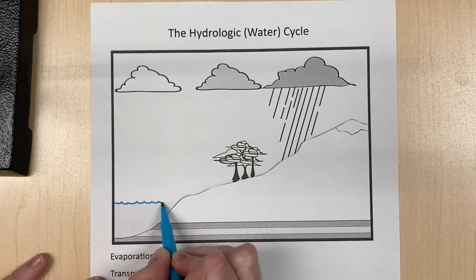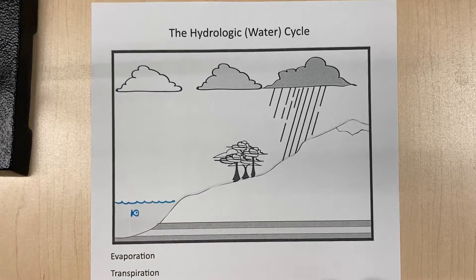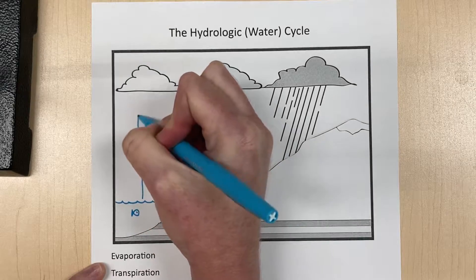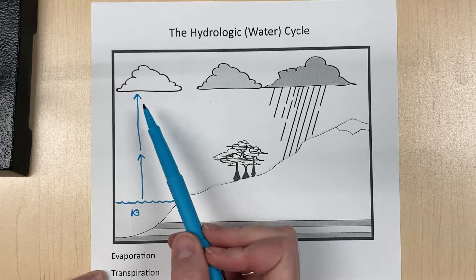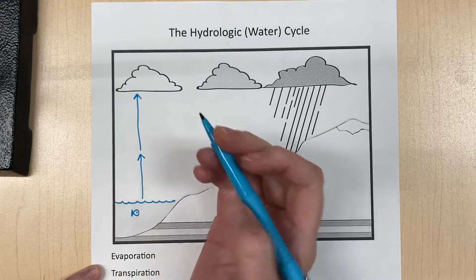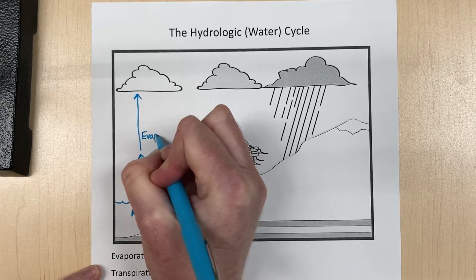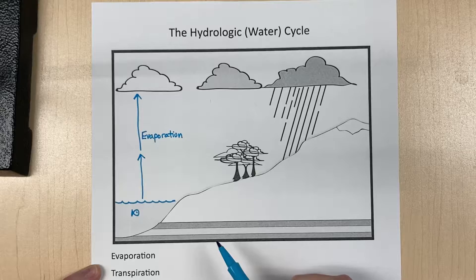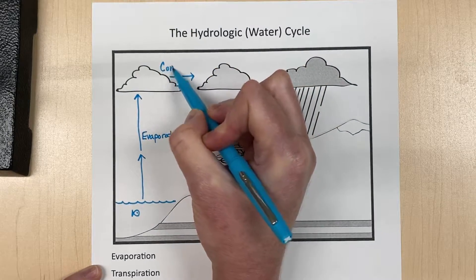So if this is ocean or even a lake, water evaporates out of it. And once it reaches the upper atmosphere, it condenses into clouds because it gets colder and colder air can't hold as much moisture. And so it creates first clouds. So this process right here is evaporation. And then that moisture condenses into clouds — we call this condensation.